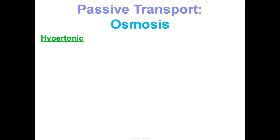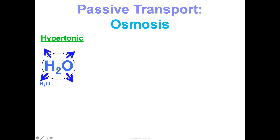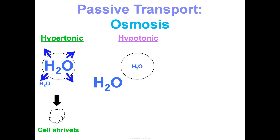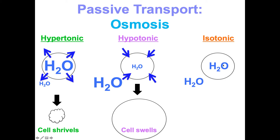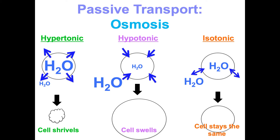Let's look at that another way. Hypertonic: the solution has less water than the cell, so water moves out, causing the cell to shrivel up. Hypotonic: more water outside in the solution than inside, so water rushes in, causing the cell to swell up — hypo like a hippo. Isotonic: think I for identical. It's the same concentration of water in the cell as in the solution, water moves in and out equally, and the cell size stays the same.